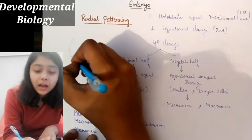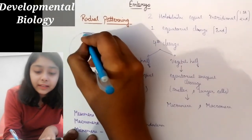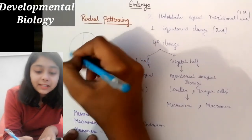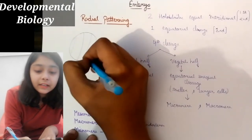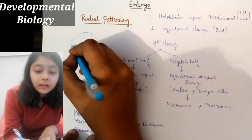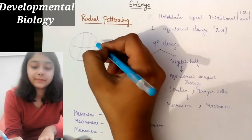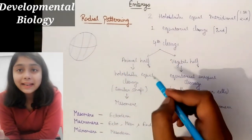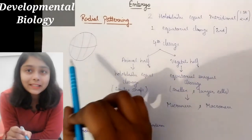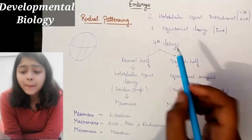So this is our first cleavage, second cleavage, then third cleavage. This gives us the eight-cell stage. Now let's talk about radial patterning further.